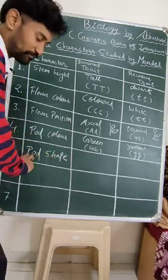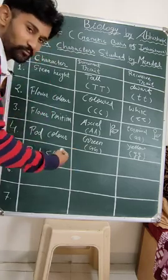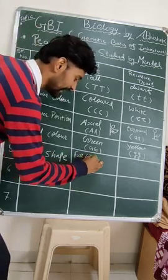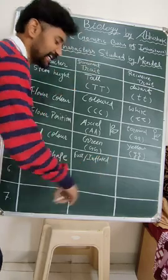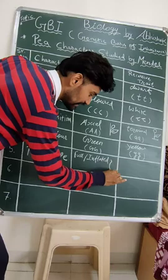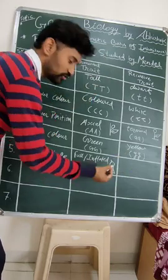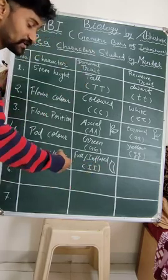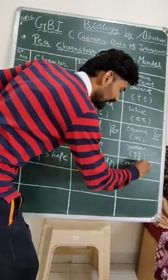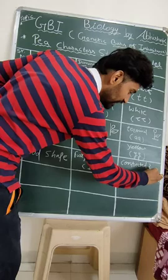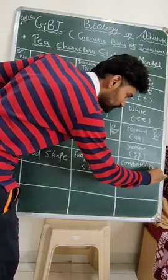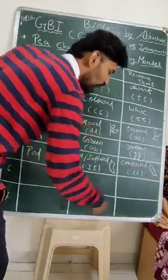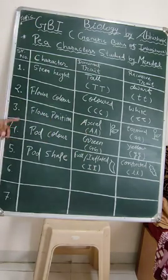Pod shape is somewhat different. The dominant form is known as 'full' or 'inflated' — where the margin is intact without any breakage or gap, denoted as capital I capital I. The recessive form is 'constricted,' which indicates the margin has a breakage or interruption, denoted as small i small i. So this completes our second pair: pod color and pod shape.